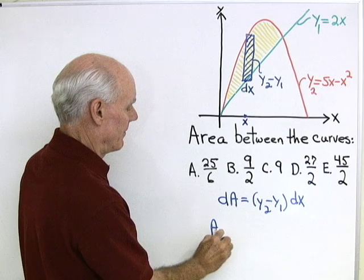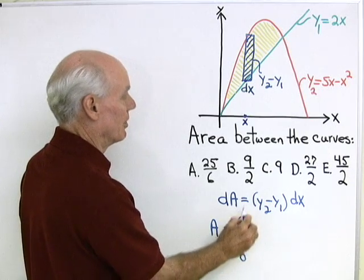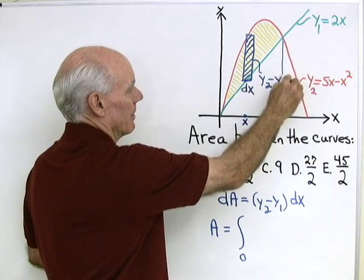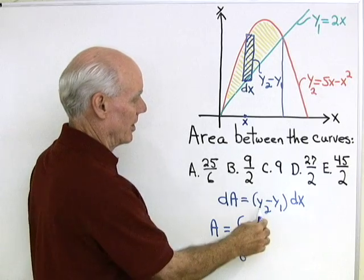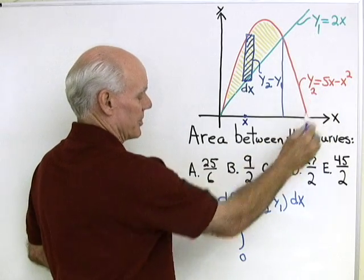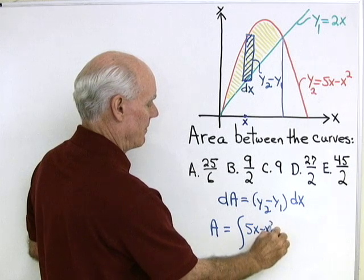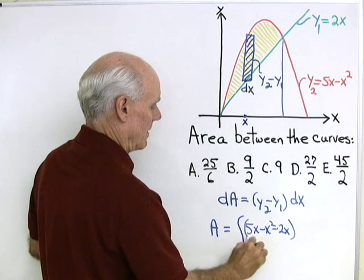The total area is what I get when I integrate from 0 over to this point. I'm not sure what that is yet so I'll fill that in in a minute. y2 minus y1, so 5x minus x squared subtract 2x, dx.